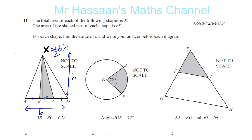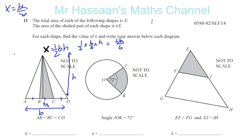BC is one part out of three, so BC is one third of the total base AD. The base of the shaded triangle is B/3. So you have half times B/3 times H, which gives BH/6. The area of x is BH/2, and the area of the shaded triangle is BH/6. This is one third of x, because the vertical height is the same and the base is one third. Therefore, k equals one third.